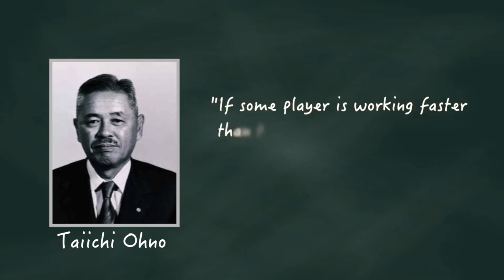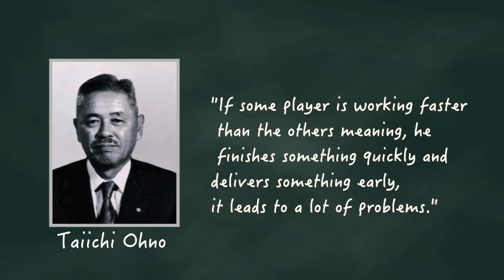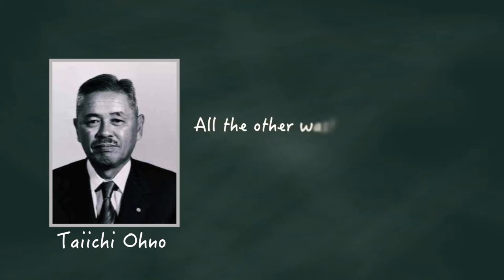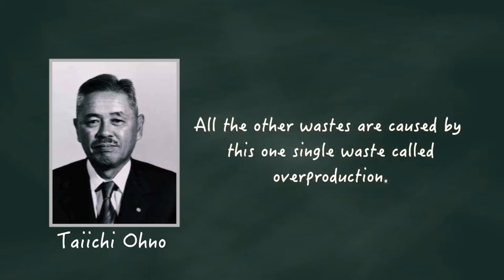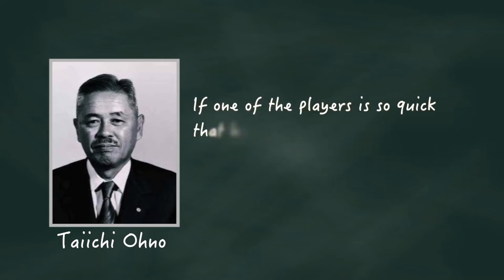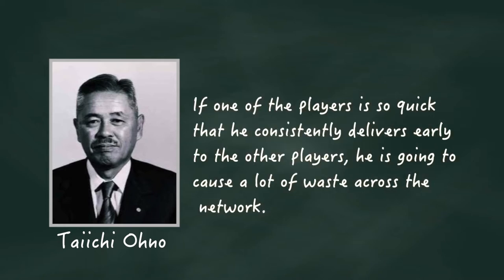What he meant was, if some player is working faster than the others, meaning he finishes something quickly and delivers something early, it leads to a lot of problems. Taichi Ono is on record saying all the other wastes are caused by this one single waste called overproduction. What he meant was, if one of the players is so quick that he consistently delivers early to the other players, he is going to cause a lot of waste across the network.